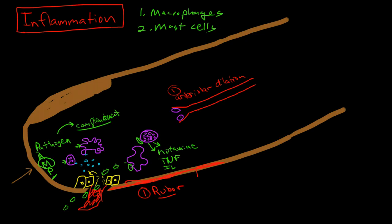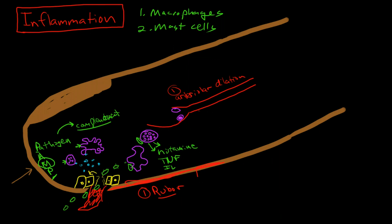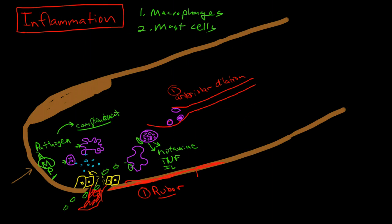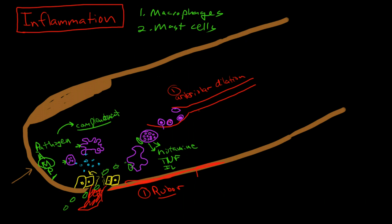We have some neutrophils here, and the next thing that happens is along the walls of these vessels the neutrophils are being attracted to the chemicals of inflammation. They begin to sort of bind with the endothelial cells, and instead of just floating through the blood, they begin to roll along the side of these vessels because of their interaction with the inflammatory chemicals.